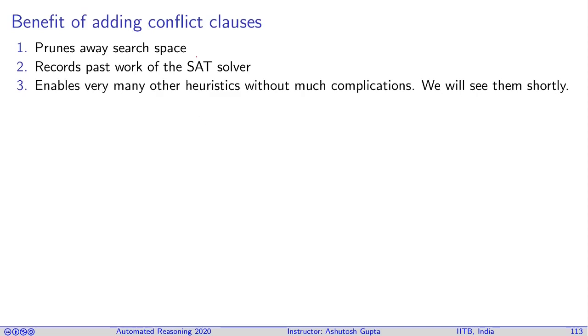So what is the benefit of adding conflict clauses? It prunes away the search space. So you are not flipping every decision you made, you're flipping only those decisions that are relevant to the conflict, and it records the past work of the SAT solver. It's a very important idea, that once you do a run and you learn from the run, when the run fails and reaches a conflict, you need to learn from your failures. And this conflict clause records the lessons learned from conflict. And there are further more optimizations that get enabled because of this, which we will see shortly.